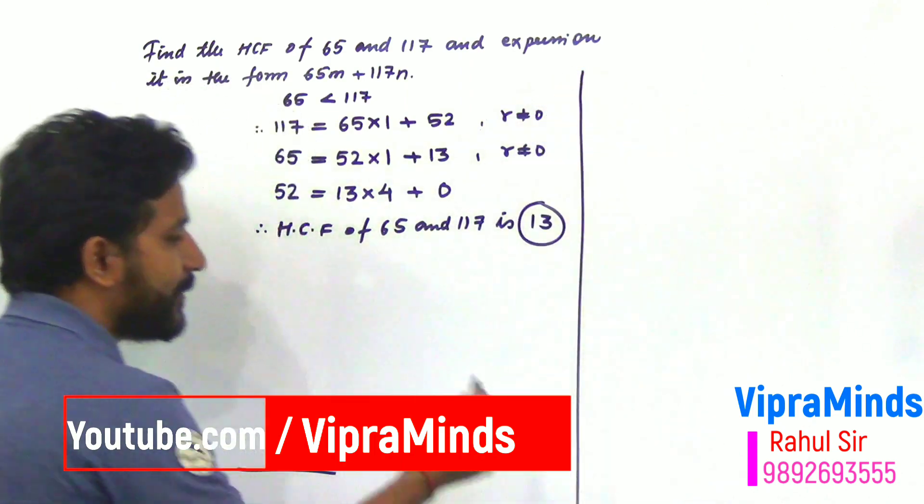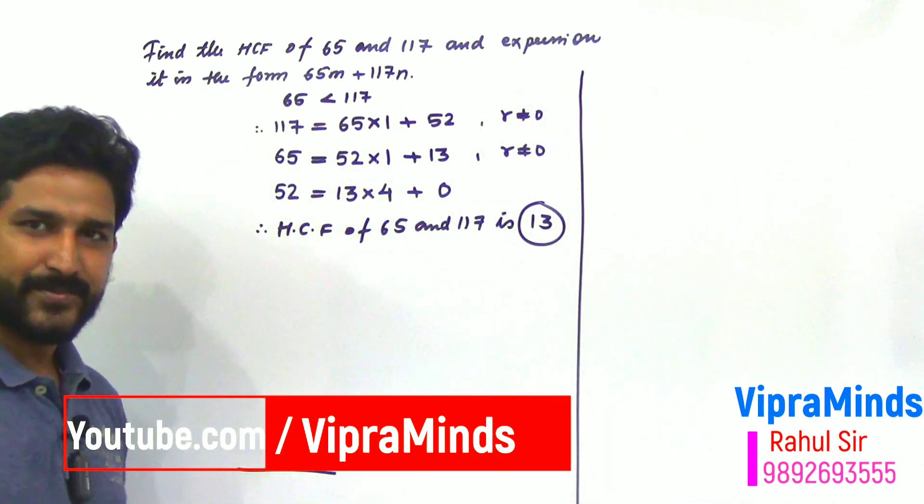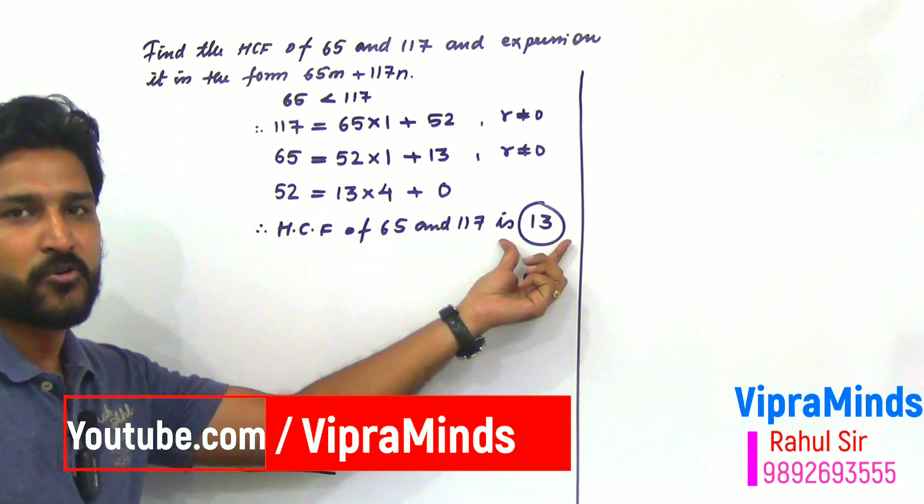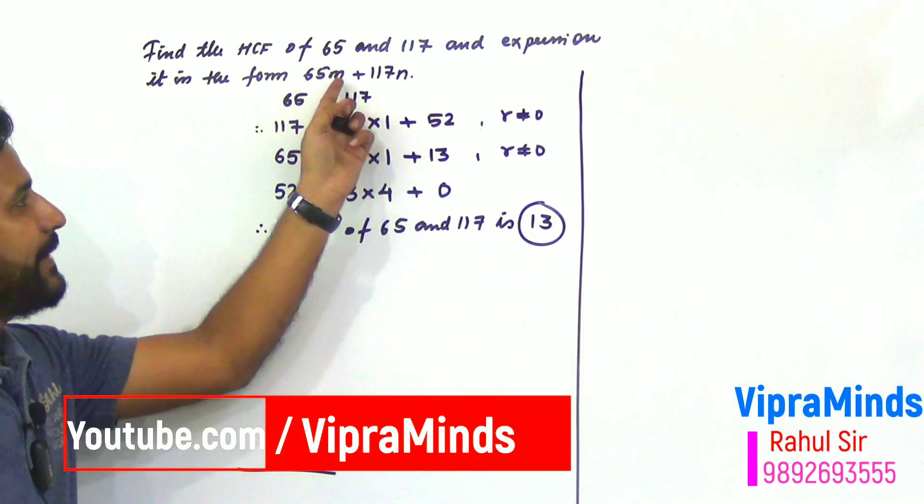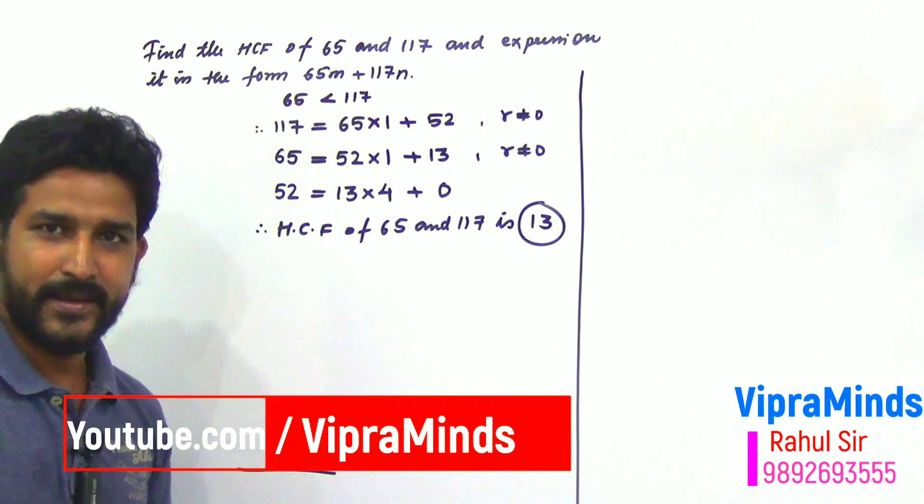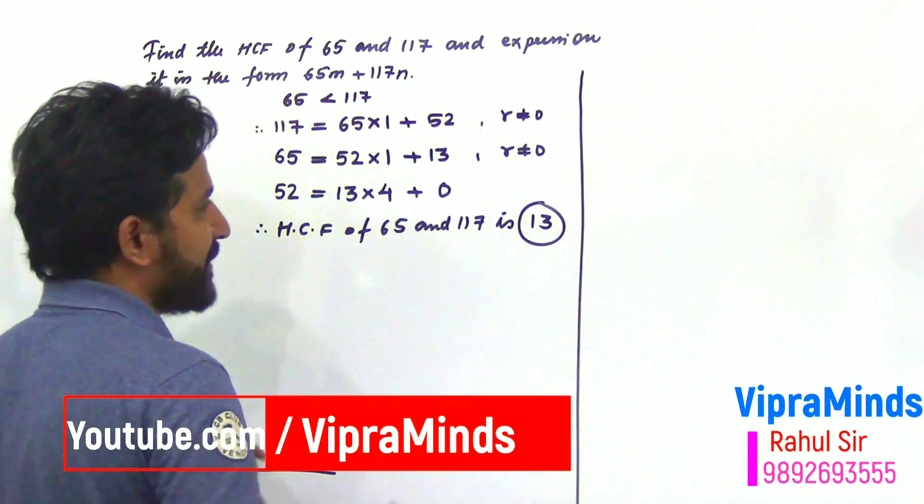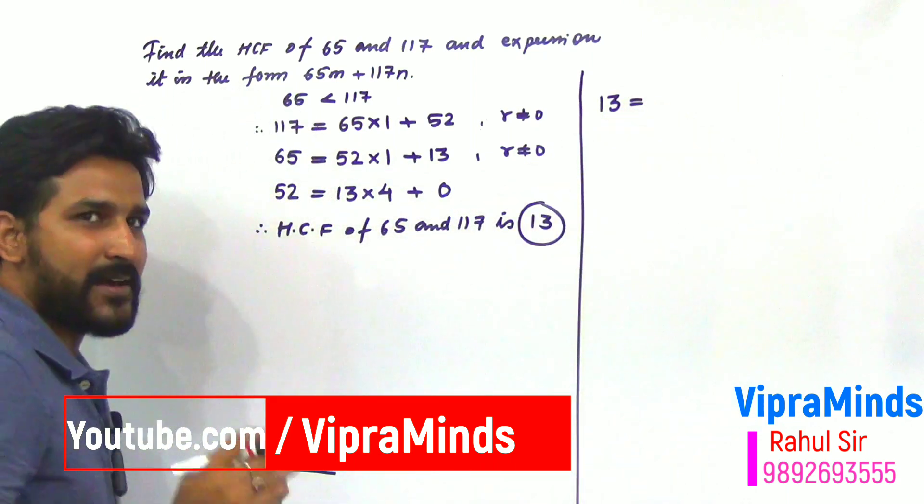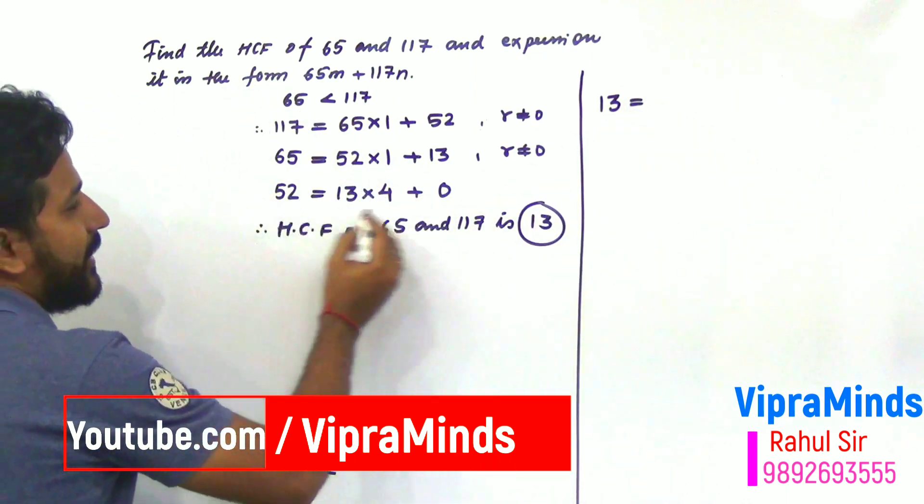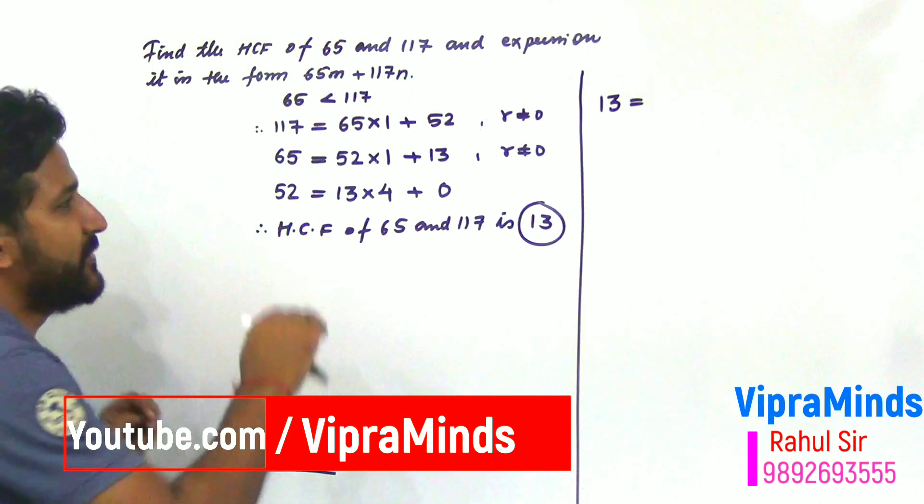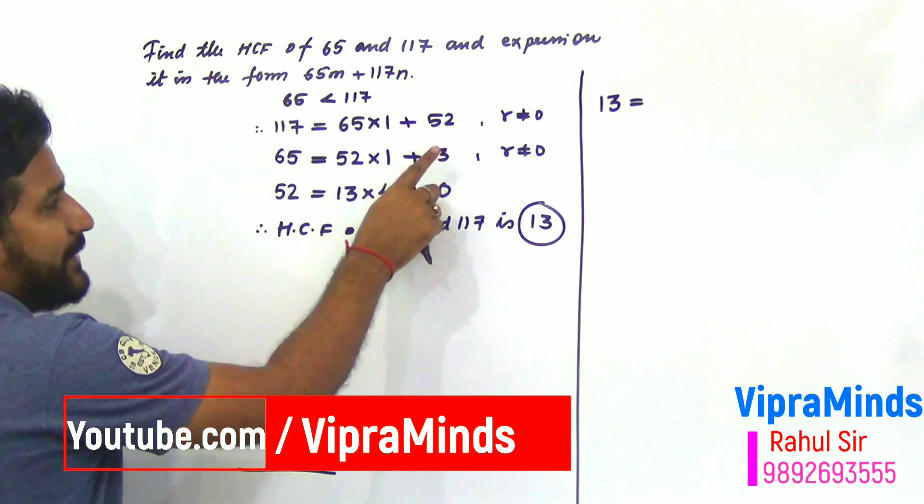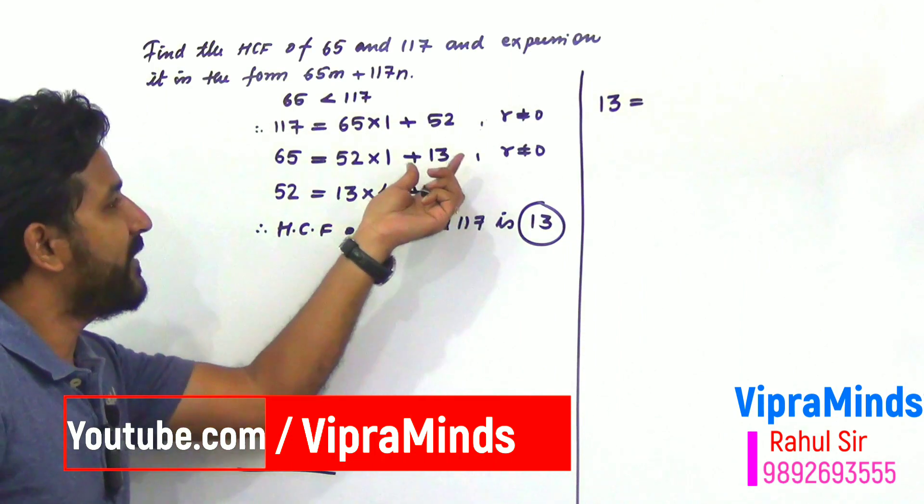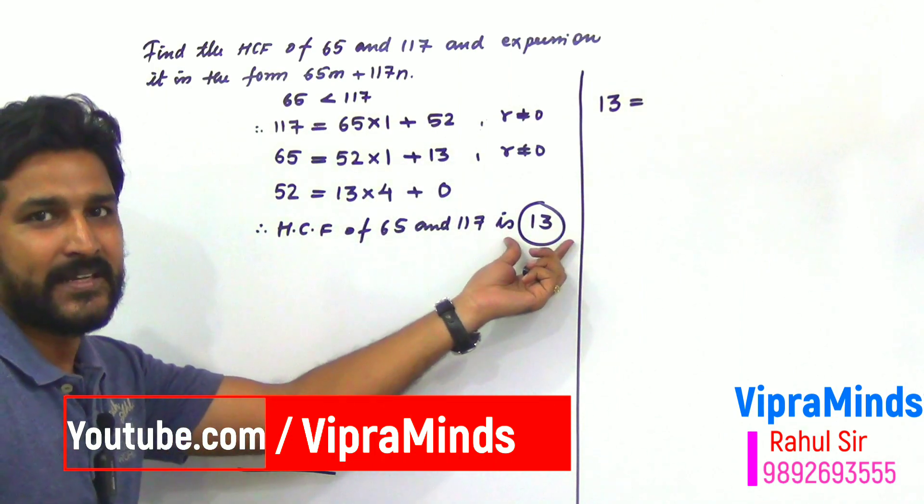Now, we will express this in linear combination form. That is, the HCF which is 13, we will represent in terms of 65M or 117N. Now 13 is equal to... We discussed in last video, skip the last step. Second last step, make the remainder as subject. The remainder will be the HCF, that is 13.